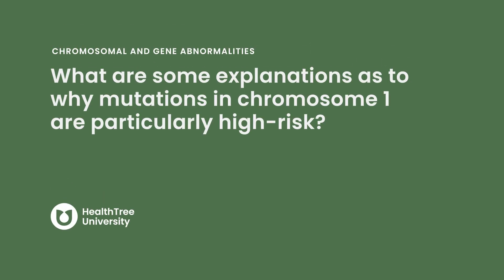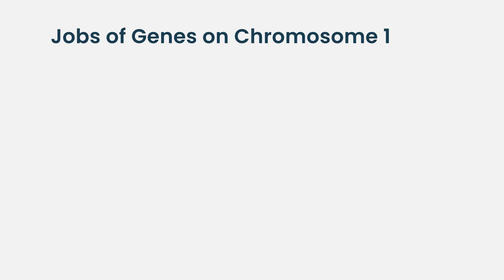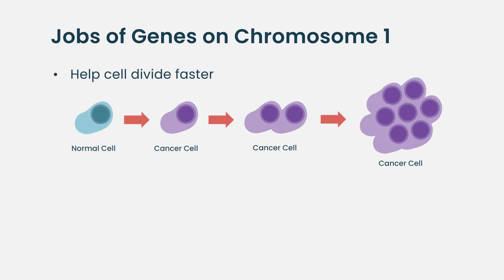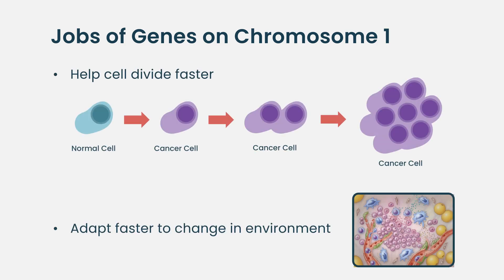What are some explanations as to why mutations in chromosome 1 are particularly high risk? The thinking is that there are many genes on chromosome 1 that help the cell divide faster and adapt faster to changes in its environment. The more copies of these genes, the more fit these cells are to survive in the bone marrow space. We also see in longitudinal analyses that some tumor cells seem to be really addicted to the genes in the 1Q area.